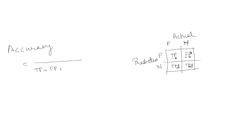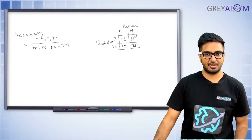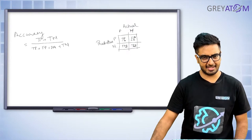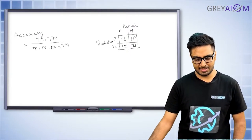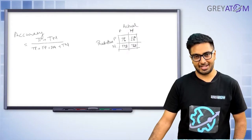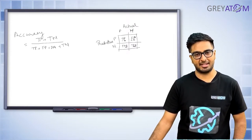Based on the confusion matrix, we can define accuracy easily. Accuracy is the number of examples predicted correctly divided by the total number of examples — TP + FP + FN + TN. We pick correctly the true positives and true negatives: the ones predicted positive that were actually positive, and those predicted negative that were actually negative. So accuracy covers both correctly predicted positives and correctly predicted negatives.